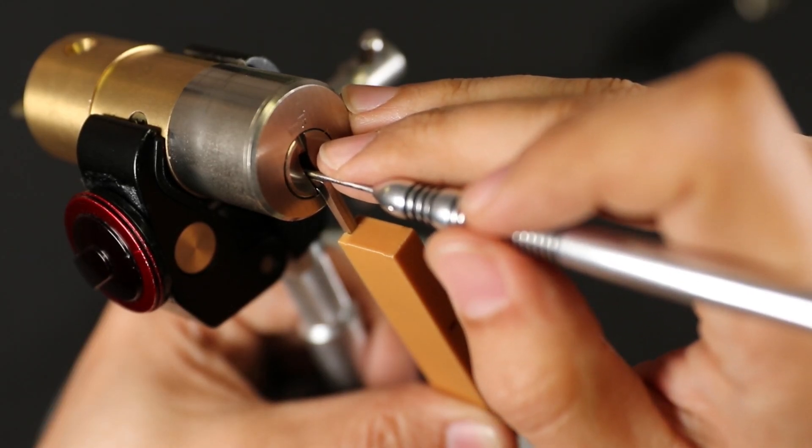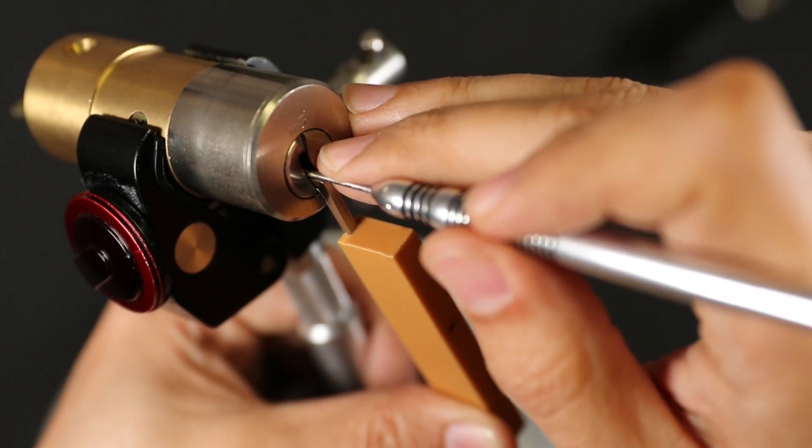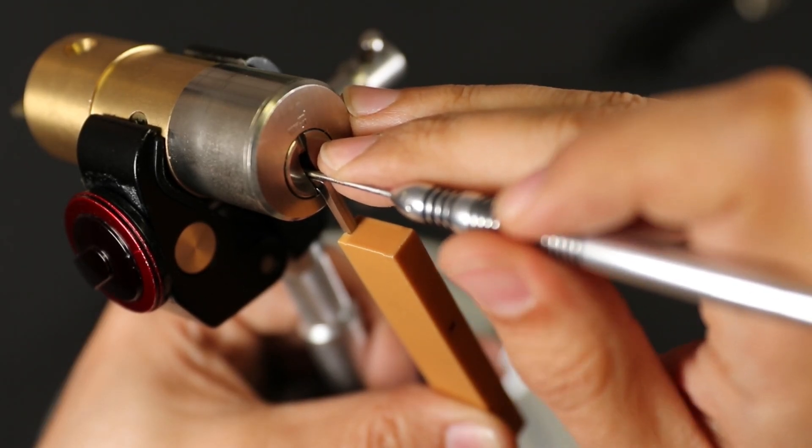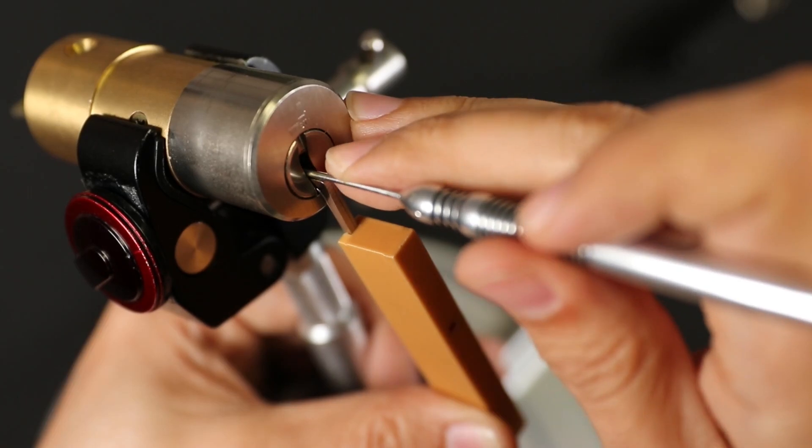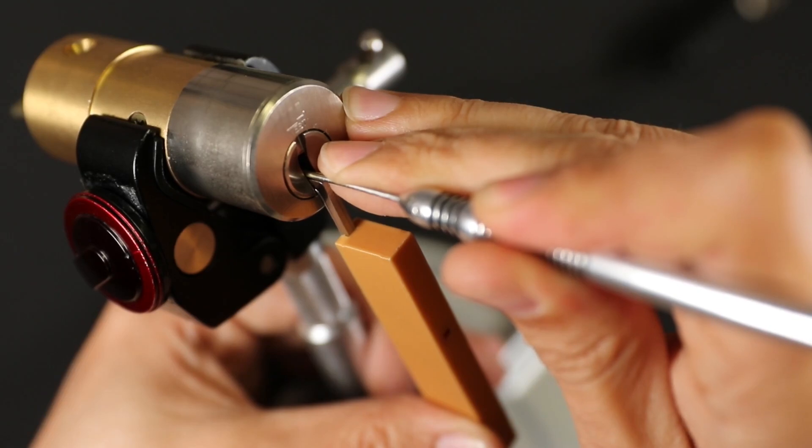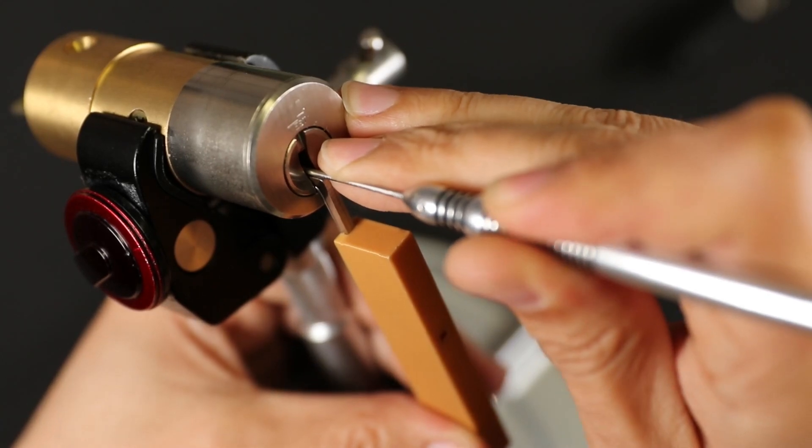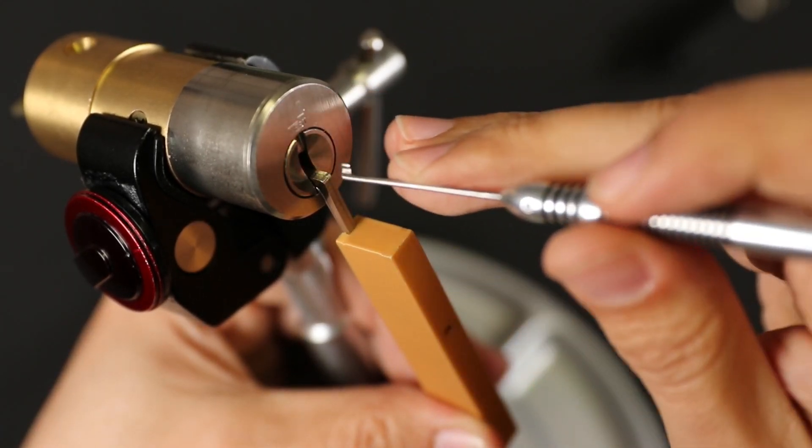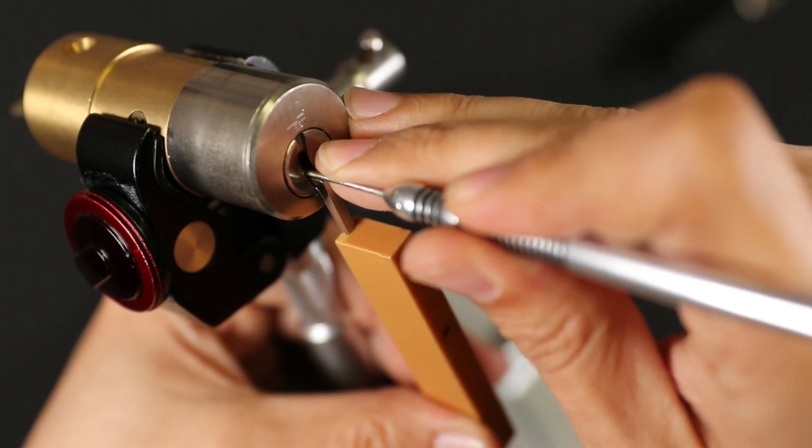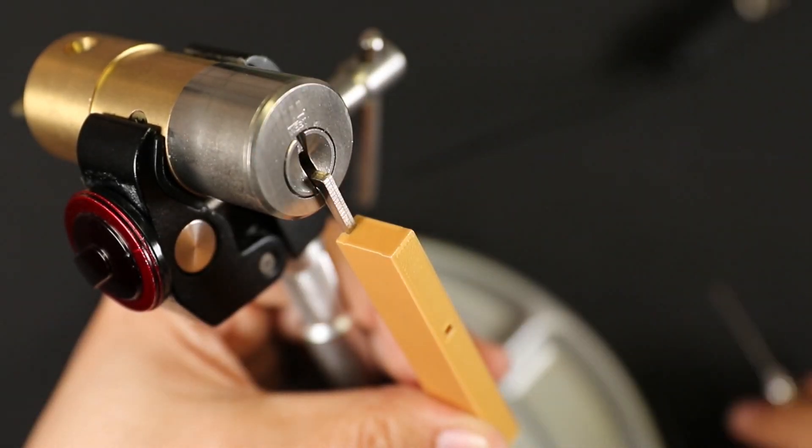Alright, so pin three. You can probably hear it better than me, but I think I feel the slightest bit of spring there. One, two, and one. I think one right here is the binder right up front. There we got a click. So that gave me some counter rotation and then set. Check the rest. Two is already far down, and three is a little bit springy. Okay, so I think that's the right side set.